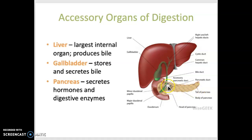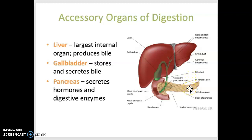The pancreas, shown here in a yellowish color, is actually located behind the stomach — so the stomach is not pictured here, otherwise it would be blocking the pancreas almost completely. It secretes enzymes and hormones. It produces all of the digestive enzymes that get secreted and do their job in the small intestine.